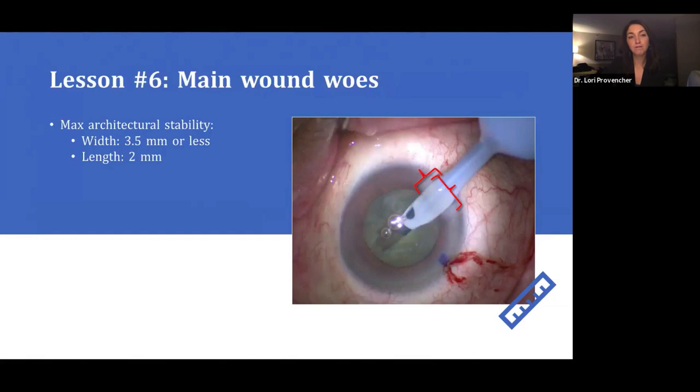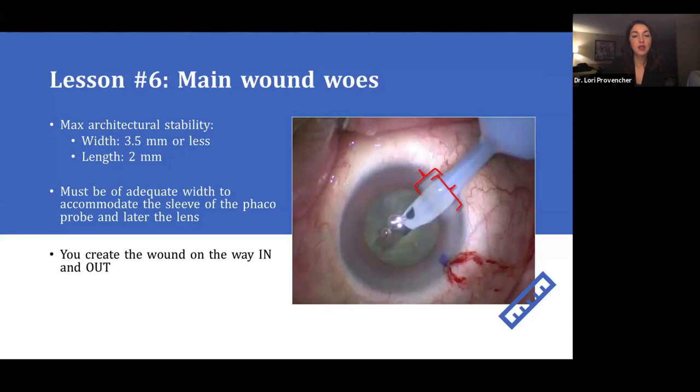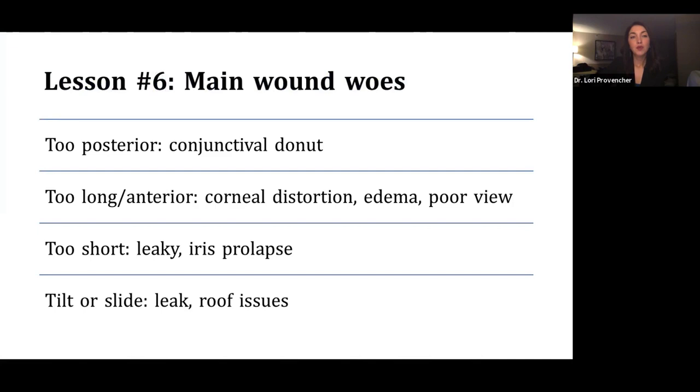One concept that's really important to remember is you actually are creating the wound on the way in, but you can potentially create the wound on the way out as well. So you need to be paying attention as you remove the blade because there's an opportunity there if your hand slips or tilts to really mess up your wound. If your wound is too posterior, you can end up with a conjunctival donut. If it's too long or anterior, you can get corneal distortion, edema, and cloud your view. If it's too short, you can get leaking at the end of the case.